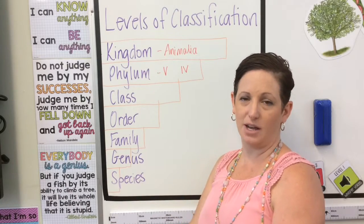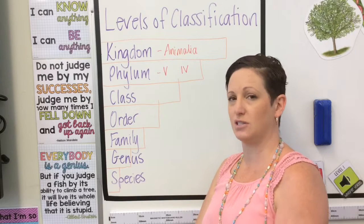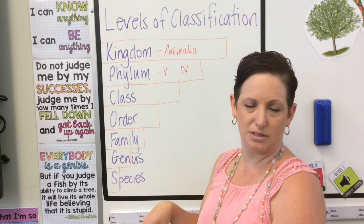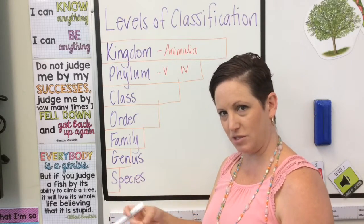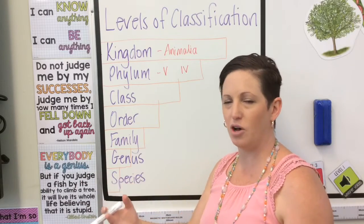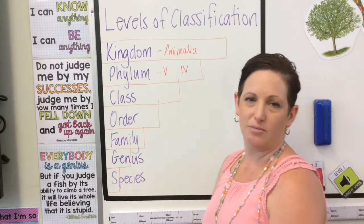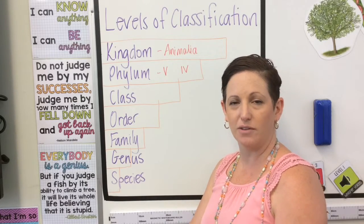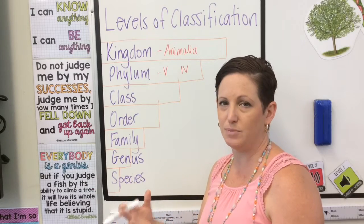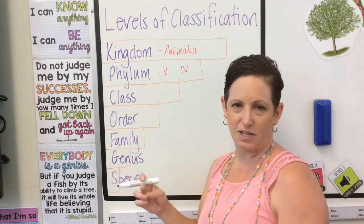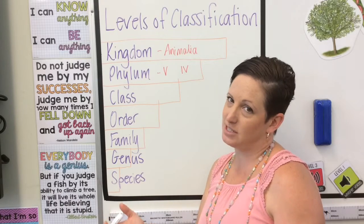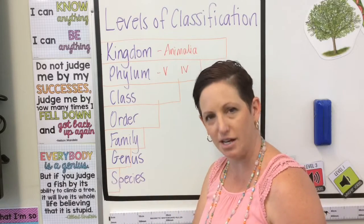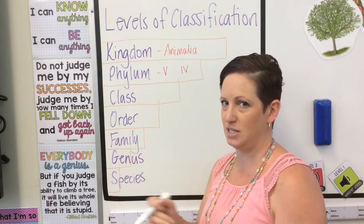Everything in science has a fancy name — it usually has a Greek or Latin root — and the reason we do that is because it's a universal language. So every country in the world will recognise these terms. I might go to a zoo in Japan looking for a lion. I don't speak Japanese, but I know the scientific name for a lion is Panthera leo. I could say to the zookeeper, 'Can you show me where the Panthera leos are?' and he will show me the lions.